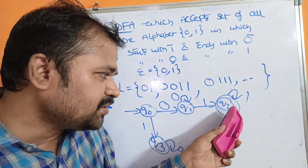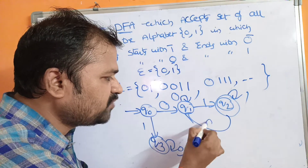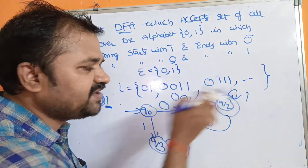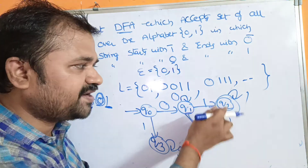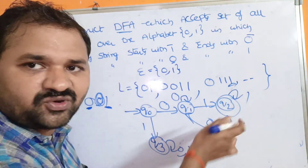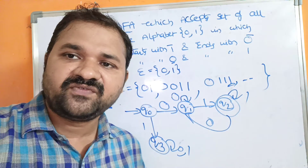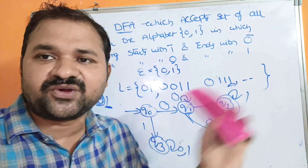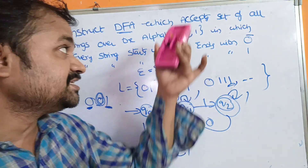If we apply 0 on Q2, we go back to Q1. After this 0, we can have '0,1' or just '1', which means the string still ends with 1 — our target is that every string ends with 1. In this way, we can solve these two examples.